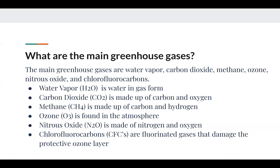We also have nitrous oxide — two nitrogen molecules and one oxygen — made by bacteria in the soil and ocean. Lastly, we have chlorofluorocarbons, also known as CFCs. These are fluorinated gases that damage the protective ozone layer. If they damage the ozone layer, sunlight radiation can go straight onto earth instead of being blocked by the ozone, causing us to absorb ultraviolet radiation.